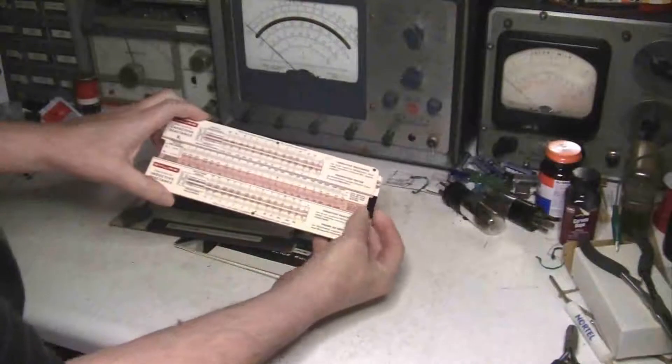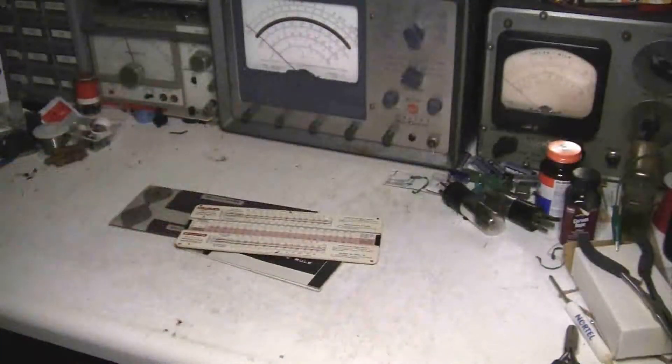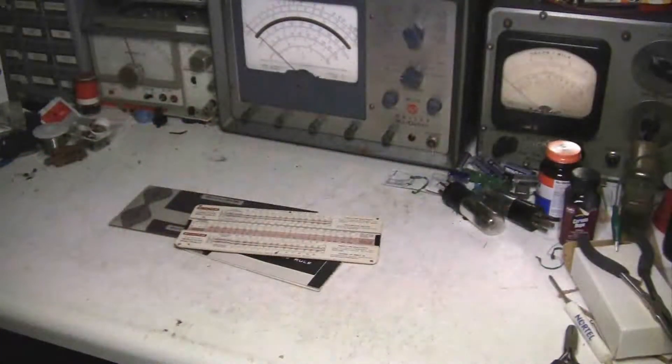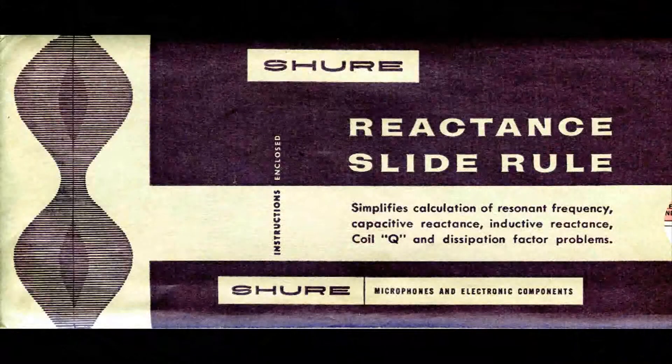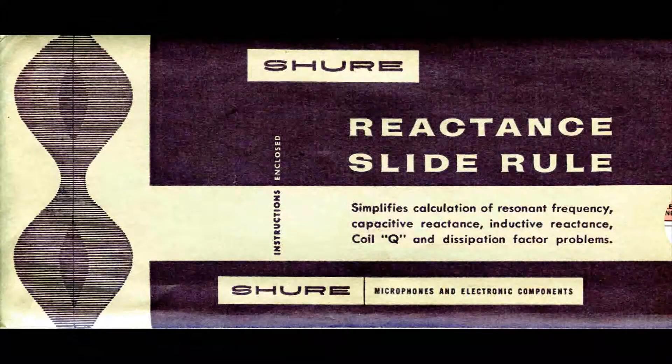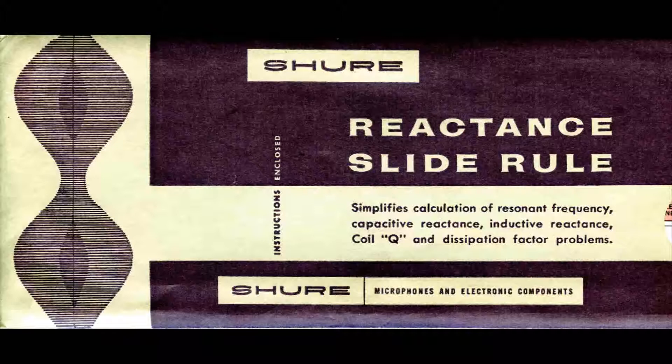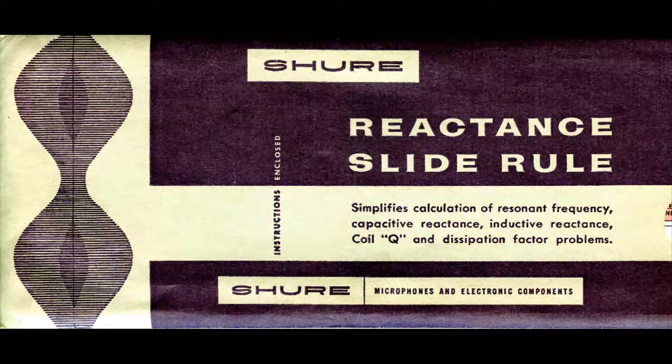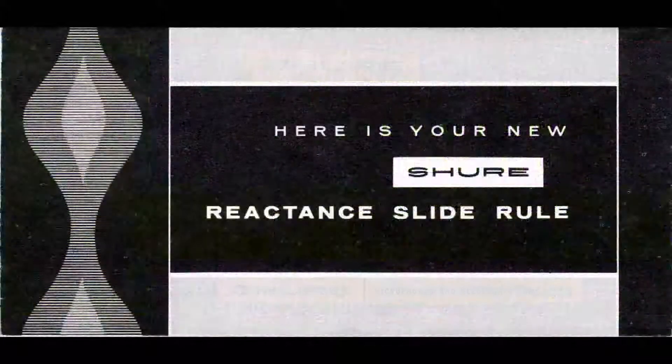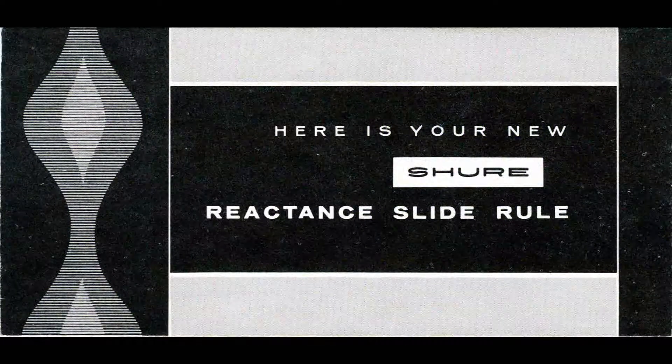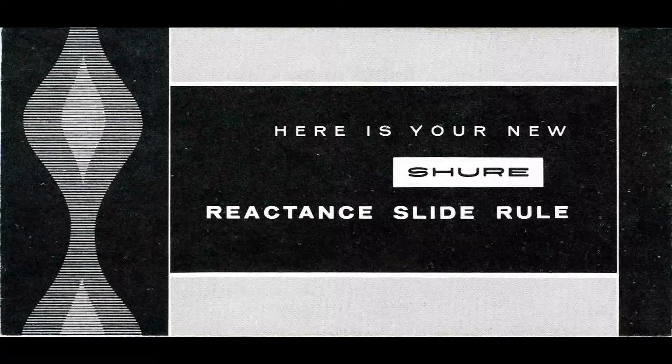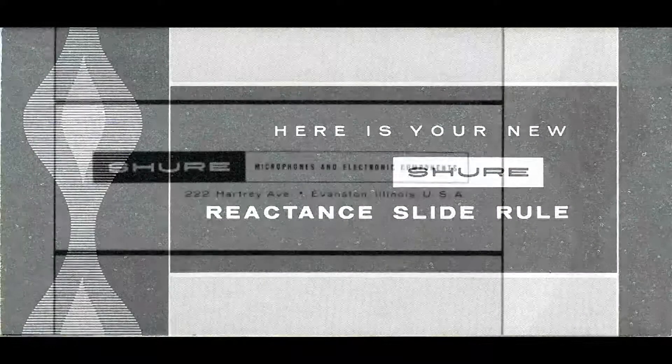This is the paper container for the Shure slide rule. And inside this container we have the instructions. This is of course the front side, and this is the back side.